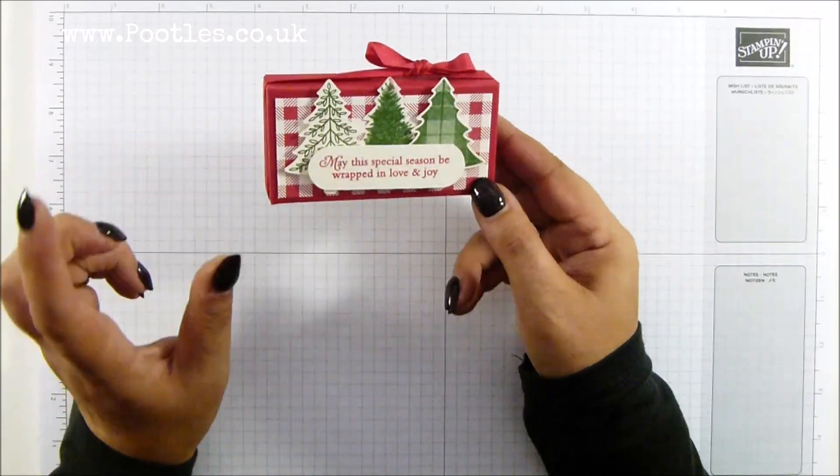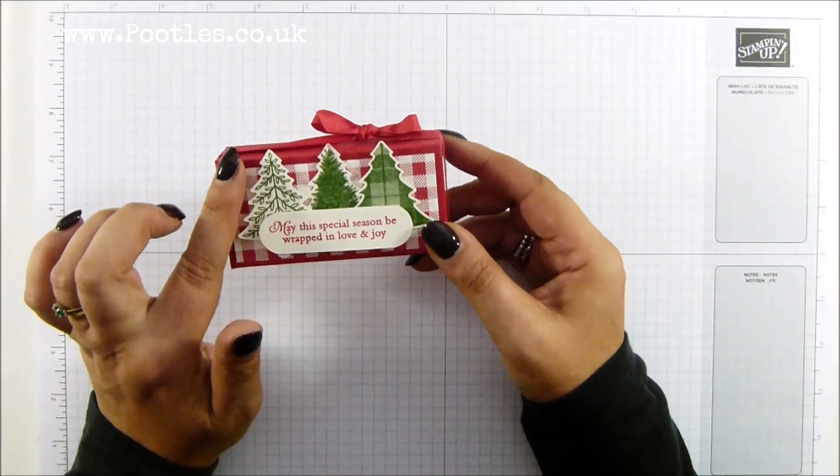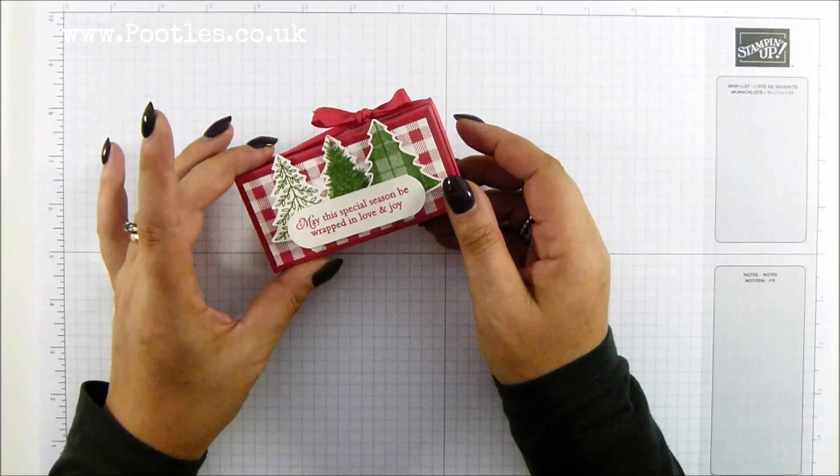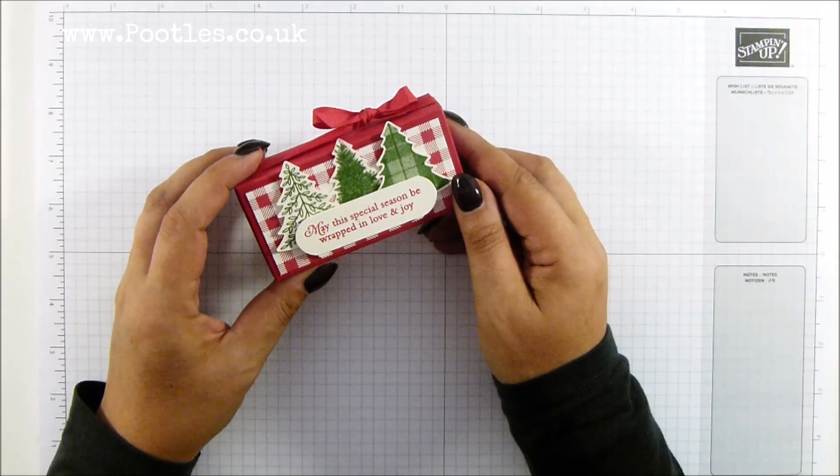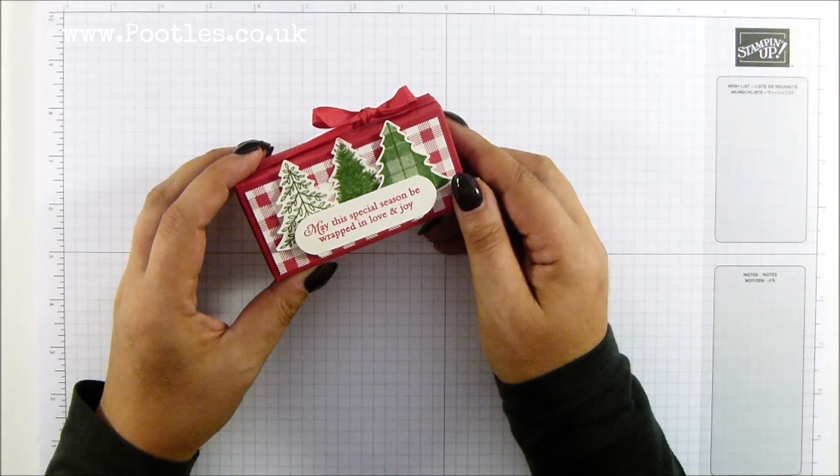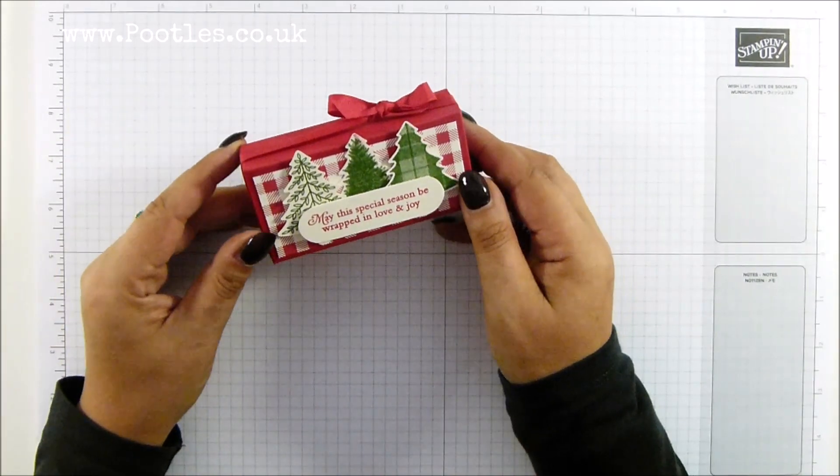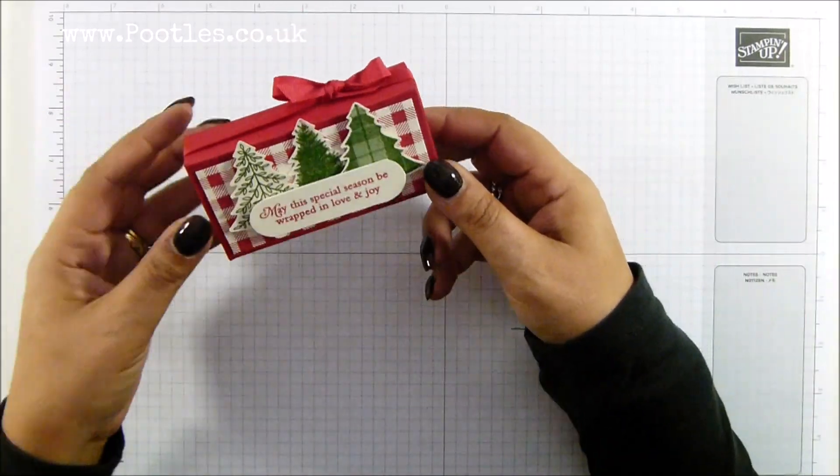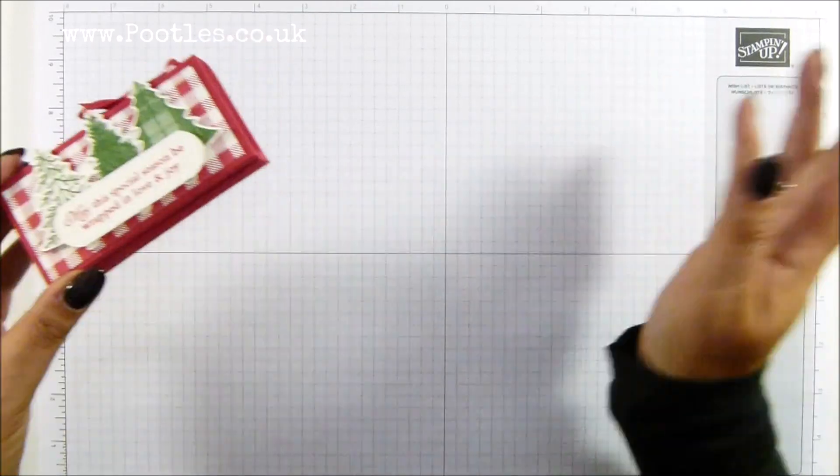So I'm showing you the Toile Tidings DSP and the Wrapped in Plaid stamp set which has got a matching punch. Now I have to say I am British and I'm southern British English, and I for some reason say plaid not plad, which is weird. And it's also toile, not toil, but that's because it's French. So it's Toile Tidings, Wrapped in Plaid.